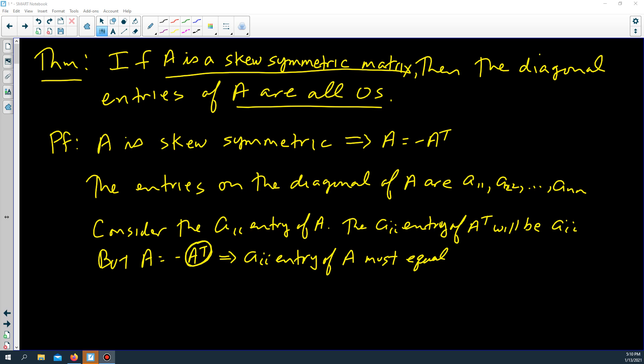The A transpose element of AII is AII. With the negative sign in front, that is AII must equal negative AII.